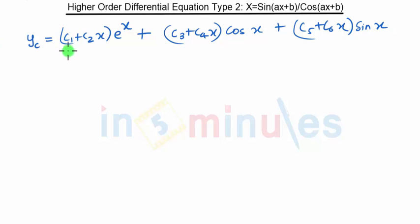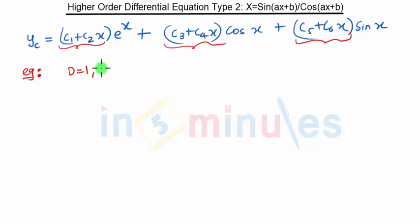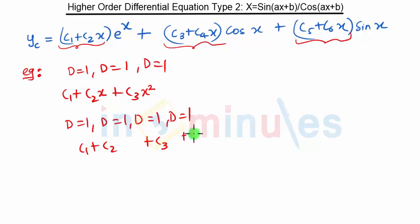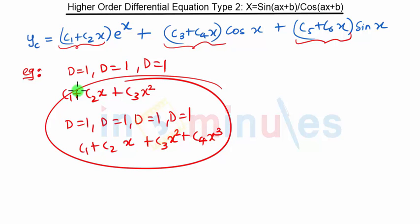As you can see, for roots which are repeating twice we have these terms. Taking another example: if the roots are repeated thrice, that is D=1, D=1, and D=1, the solution will be c1 plus c2·x plus c3·x². When roots are repeated four times it becomes c1 plus c2·x plus c3·x² plus c4·x³. This is the generalized form. In our case the roots are repeated twice, so we have two constants and one constant multiplied by x.